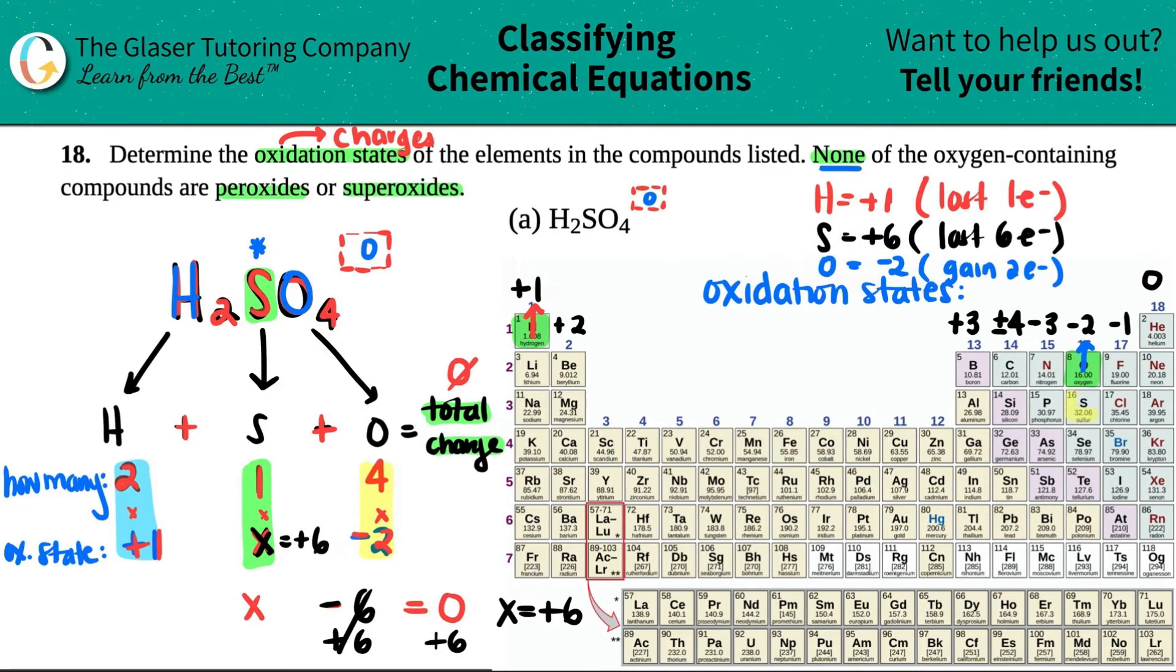And just note that, look at the sulfur here. The sulfur going by the chart is a negative two, but that's not the case. So that's why you have to use algebra to sometimes solve. And there you go. Those are your oxidation states.